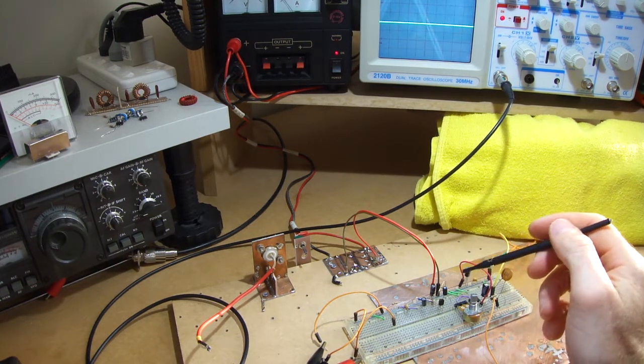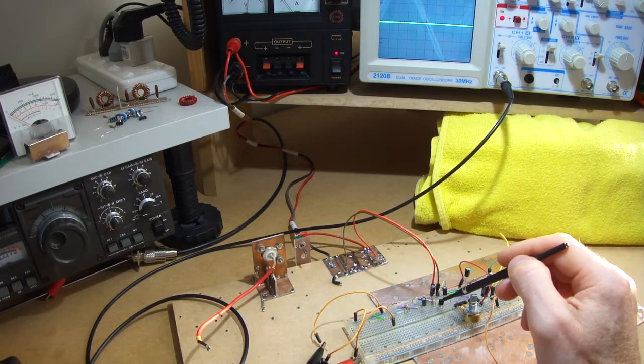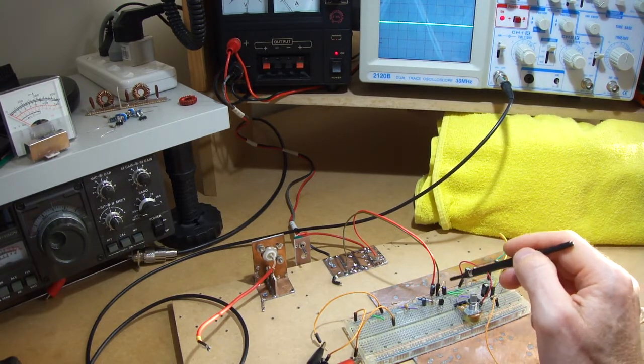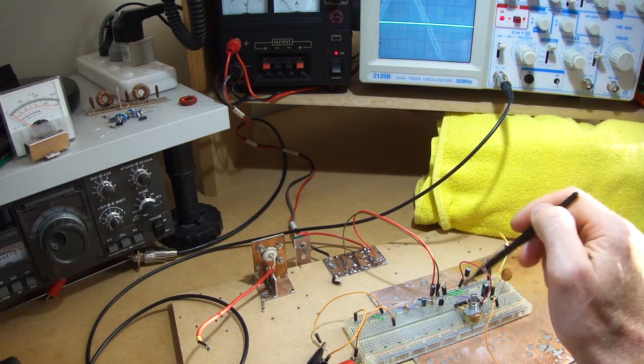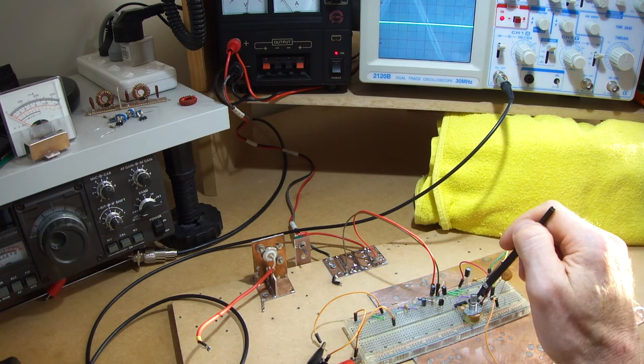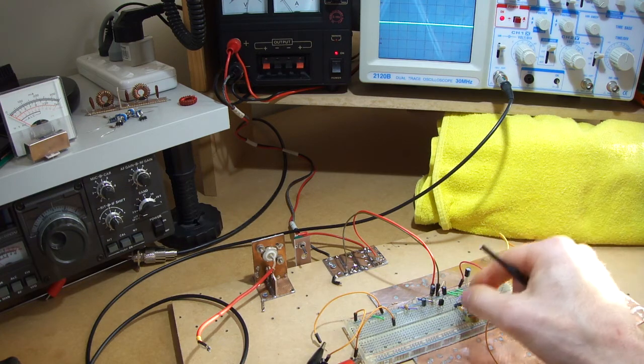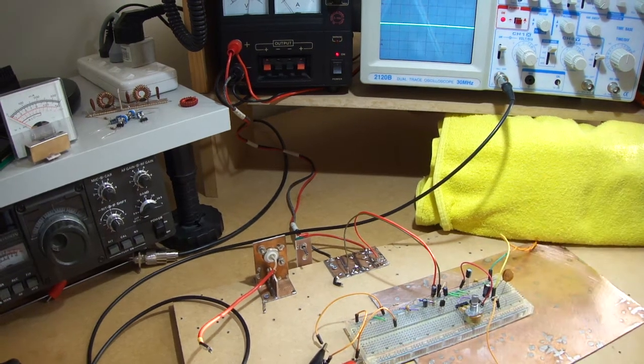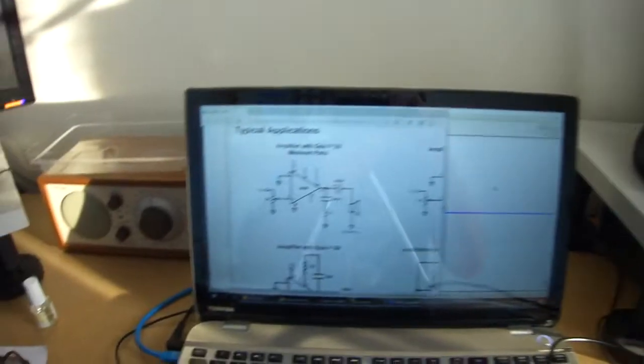So the circuit itself is two stages. It's a 2N3904 audio preamp here, then feeding in through the master volume into an LM386N-1. So we'll look at the design of this circuit, and in fact we'll start off with the 386.